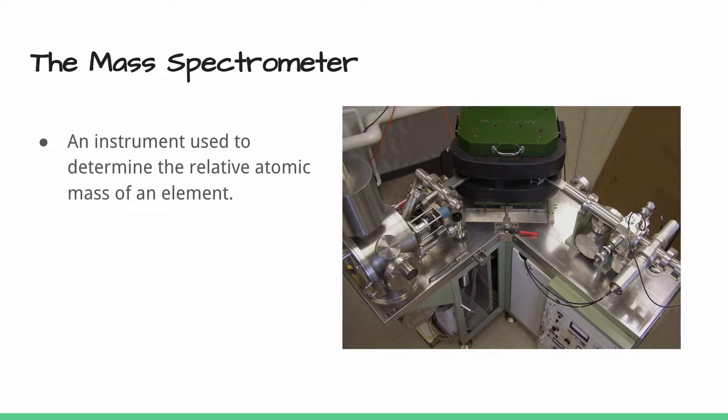It's an instrument that's used to determine the relative atomic mass of an element. We can use it to show the isotopic composition because it shows us all of the different isotopes that are involved in our sample.